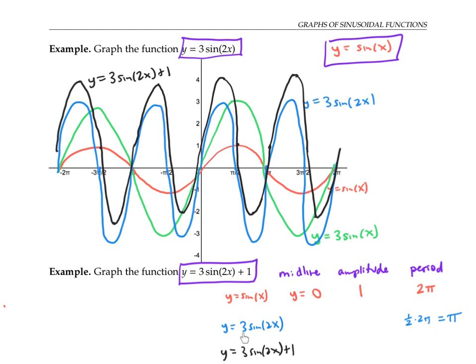But the three on the outside does affect these things. In particular, it affects the amplitude — since everything is stretched out vertically by a factor of three, the amplitude of one gets stretched to an amplitude of three. In this case, the midline doesn't actually change, because multiplying a y value of zero by three is still a y value of zero.